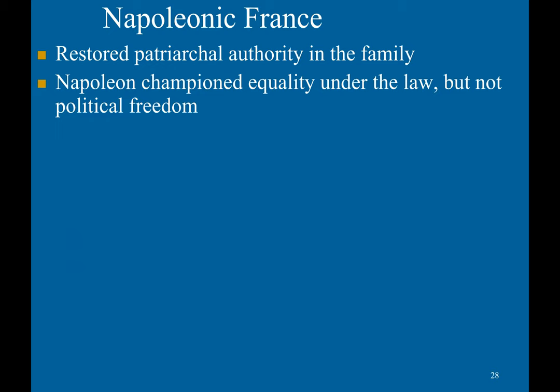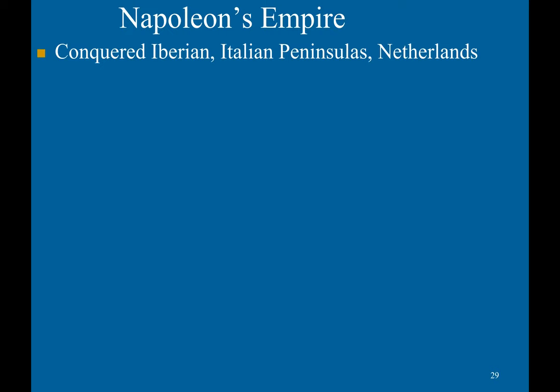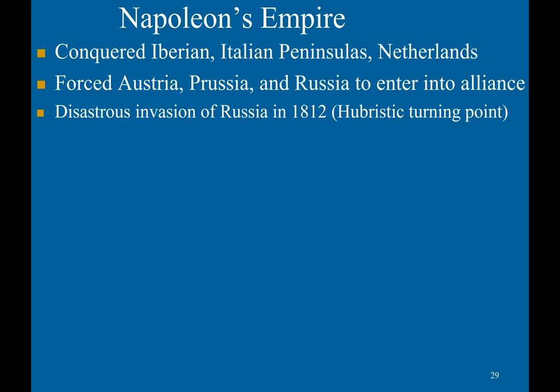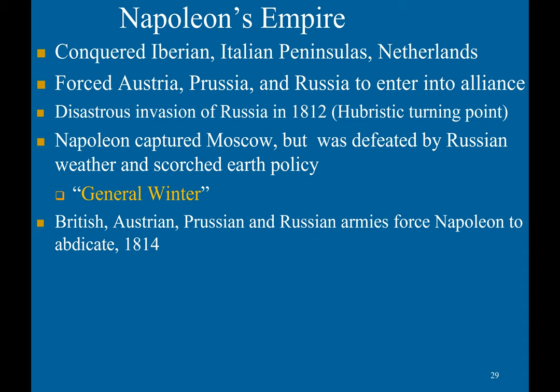He imposed tight control on newspapers, used a secret police force, arrested suspected political opponents, systematically used propaganda, and ignored elective bodies. Napoleon eventually went on a conquering spree, conquering the Iberian and Italian peninsulas as well as the Netherlands, and forced Austria, Prussia, and Russia into alliance. He then disastrously invaded Russia in 1812. Napoleon was able to capture Moscow but was defeated by Russian weather and the scorched earth policy — this is where the notion of him being defeated by General Winter comes from.